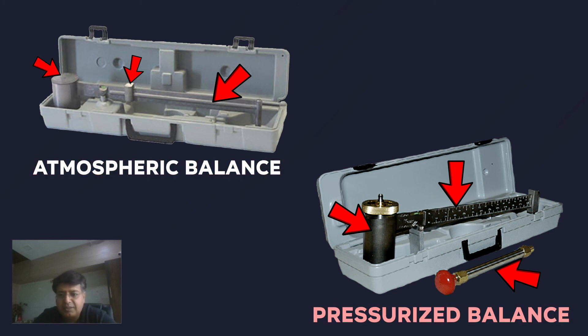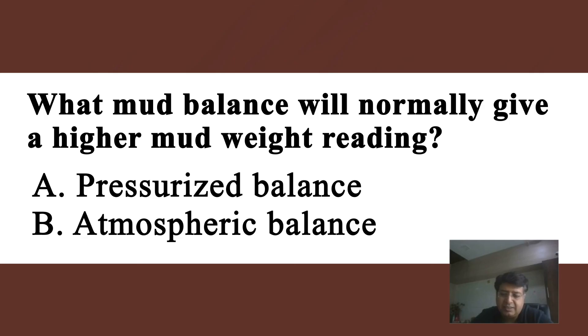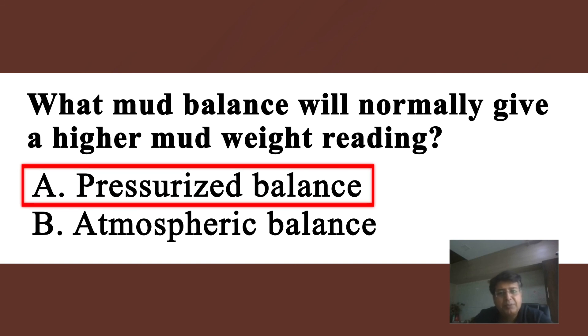So whenever you take readings on both an atmospheric mud balance and a pressurized mud balance, you will see the mud weight on the pressurized mud balance is more than the atmospheric one. Generally, a pressurized mud balance gives higher mud weight readings.